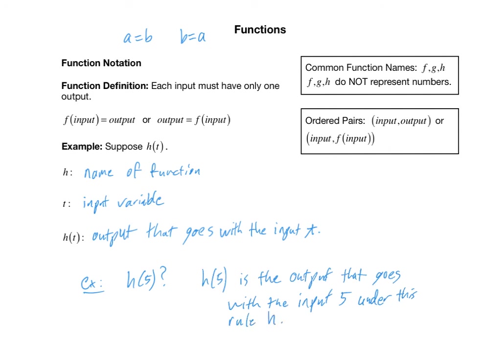With this new function notation, ordered pairs are always of the form input comma output. But using function notation, the ordered pair is of the form input comma f of the input — meaning exactly the same thing but using function notation. Remember, f of the input is the name of the output that goes with that particular input. Each input must have only one output in order for us to use this function notation.